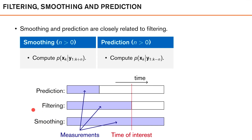The relation between prediction, filtering, and smoothing can be seen in this figure. In all cases we are interested in knowing the state at time k. For prediction, we have only received measurements up to k−n but would like to say something about the state at future time k. For filtering, we have received all measurements up to time k and use them to estimate the current state. For smoothing, we have received measurements up to k+n and use all of these observations to improve our knowledge about the state at time k.